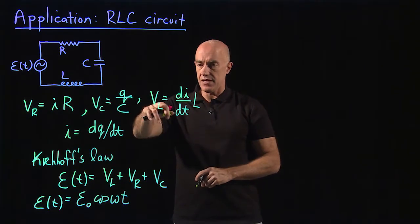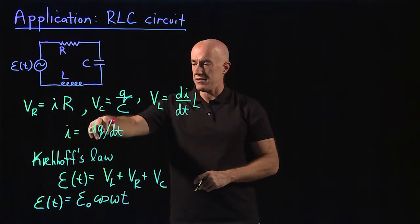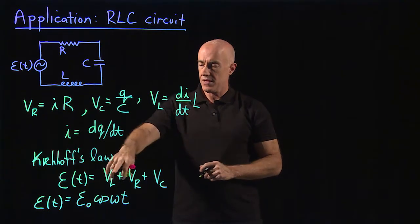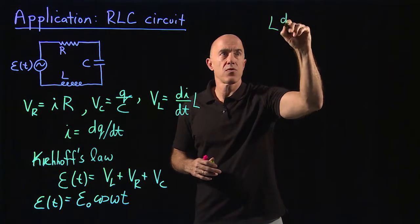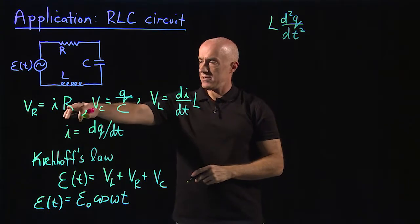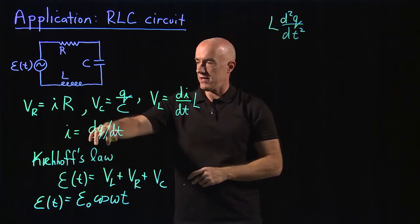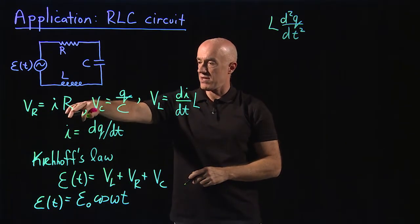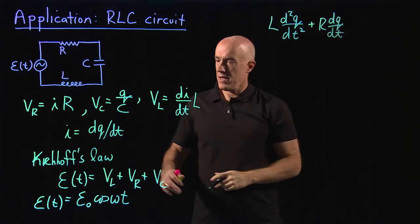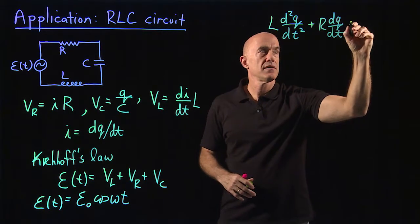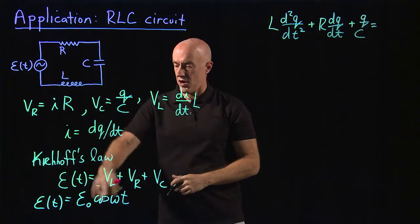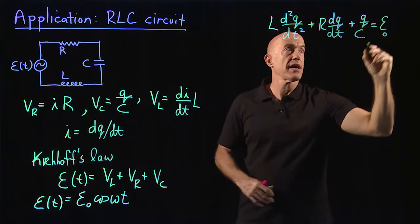So VL is L times di/dt, but i is dq/dt. So we can write a differential equation in terms of q. So VL becomes L d²q/dt². VR is i times R. i is dq/dt. So plus VR becomes plus R dq/dt. And then VC is just q over C plus q over C. And that's equal to the AC current, which is E naught times cosine ωt.